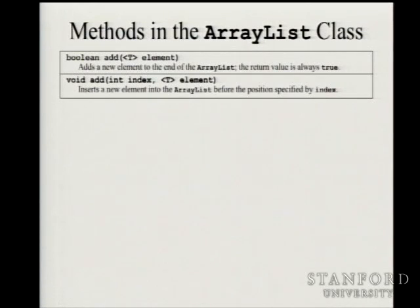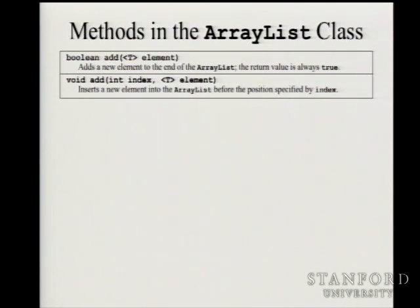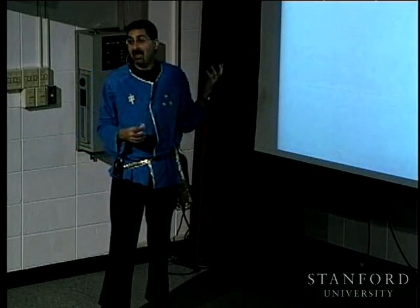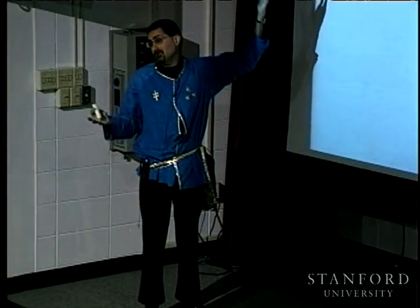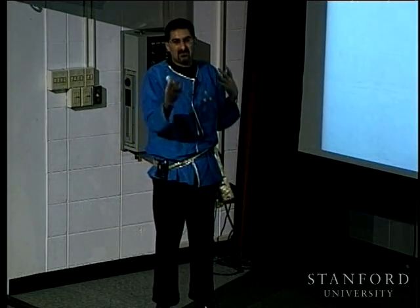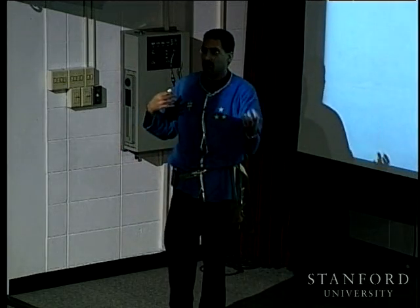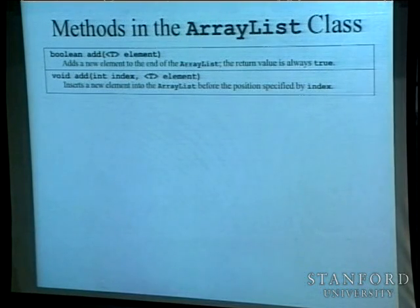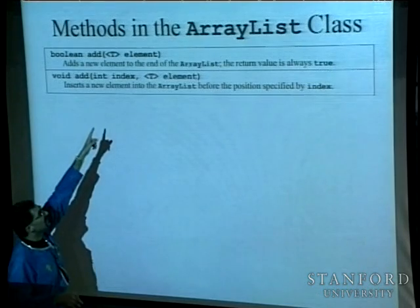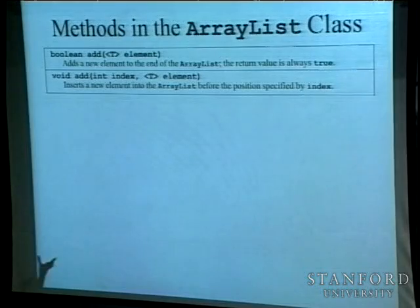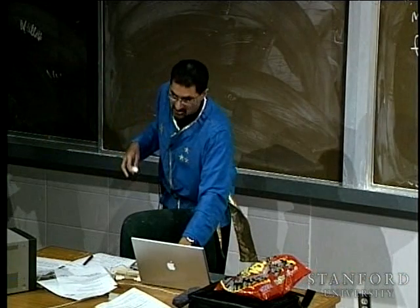Let me show you the ArrayList methods. First, 'add(element)': it takes in an element of whatever type your ArrayList is and adds it to the end. It returns a Boolean that's always true — so you don't really care about the return value. You're just going to say add. It just adds an element and the ArrayList dynamically grows by one. You can also 'add(index, element)' to add at a particular position.